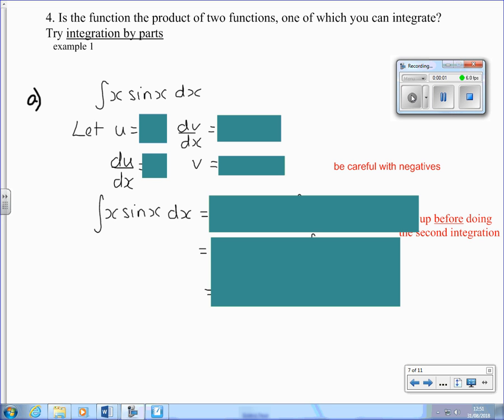Sometimes you're integrating a function which is a product of two functions, one of which you can integrate. You can use integration by parts. The formula is in the formula book. You have to decide which factor is a function you'll integrate and which one you'll differentiate. In this example, you know how to integrate both x and sine x.